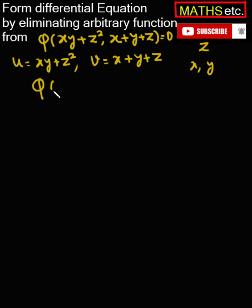The given relation becomes φ(u,v) equals zero. Taking partial derivatives of φ with respect to x and with respect to y variables, and eliminating φ function between these three equations,